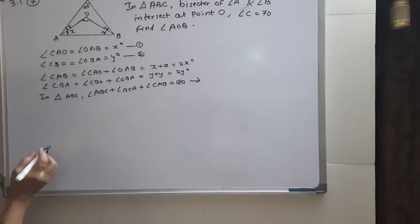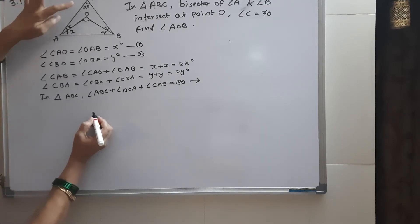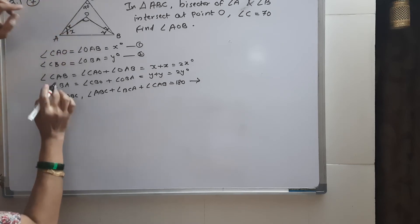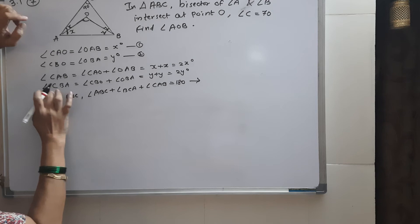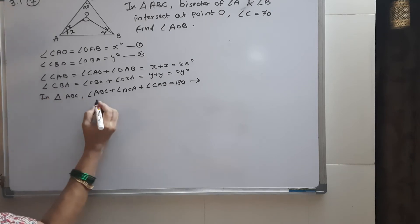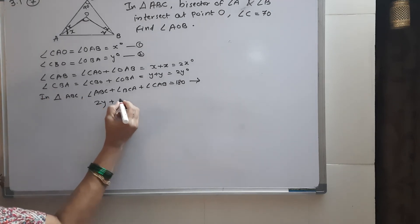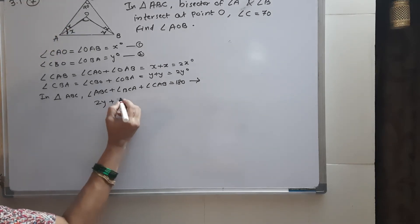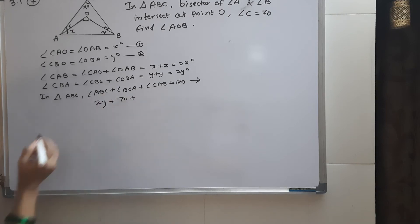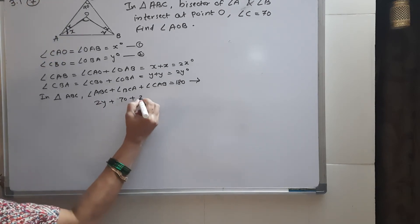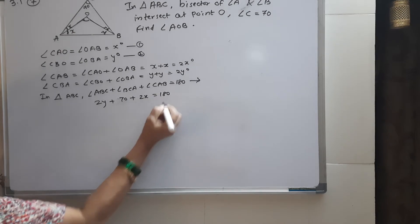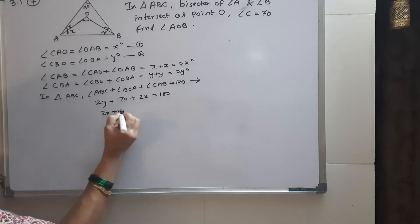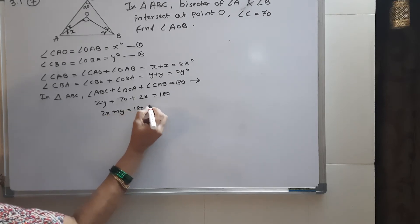Angle ABC is 2Y. Angle BCA is 70 degrees. Angle CAB is 2X. So 2Y plus 70 plus 2X equals 180. Therefore, 2X plus 2Y equals 180 minus 70, which is 110.